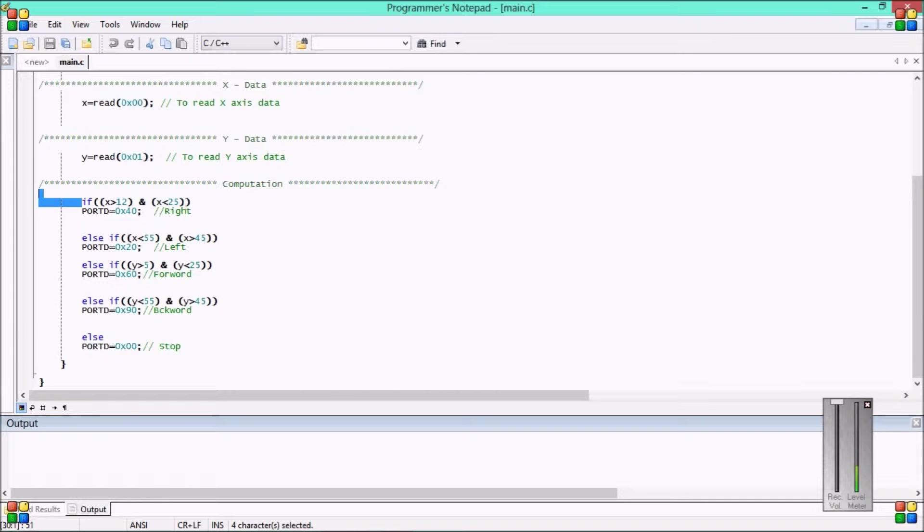Now, this statement, else-if statement, and this else-if statement, these are the fixed ones. Because acceleration sensor works according to the variation from the origin, variation from the coordinate axis. So, these are the fixed values. X is greater than 12 and x is less than 25, these are the fixed values. When this condition is applied, then it is at 0x40. 4 in binary means 0100. 2 in binary means 0010. 9 in binary means 1001. And 6 in binary means 0110. So, I have assigned D4, D5, D6, D7 these values under different conditions. So it will move right, left, forward, backward.